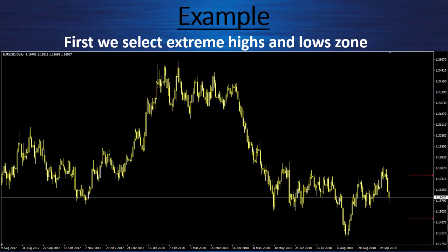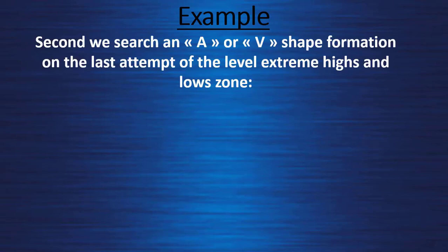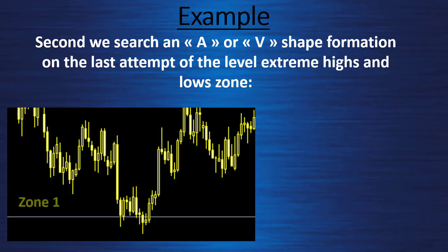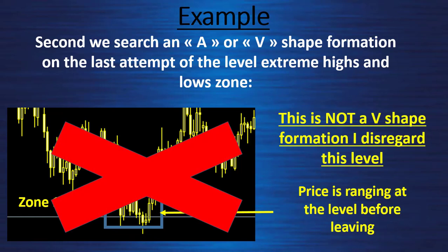Let's see some examples. On this euro/USD daily chart I select three zones — zone 1, zone 2, and zone 3. Looking at zone 1: after we search for extremes on the chart, we search for an A or V shape formation on the last attempt of the level. Here the price is ranging at the level before leaving — this is not a V shape formation, so I disregard this level because of the range.